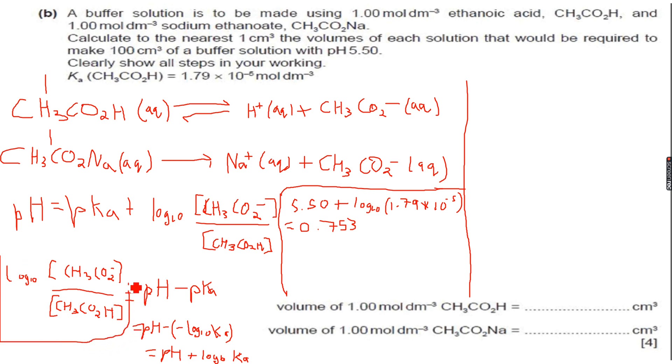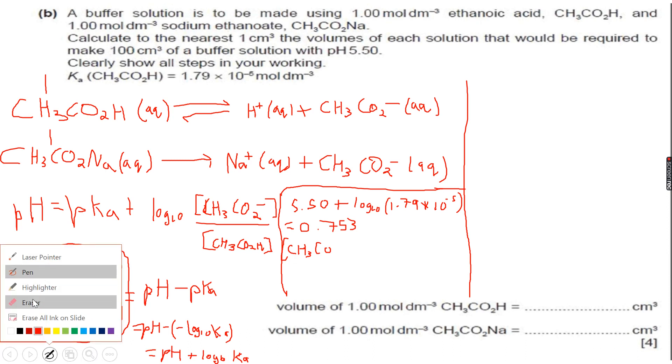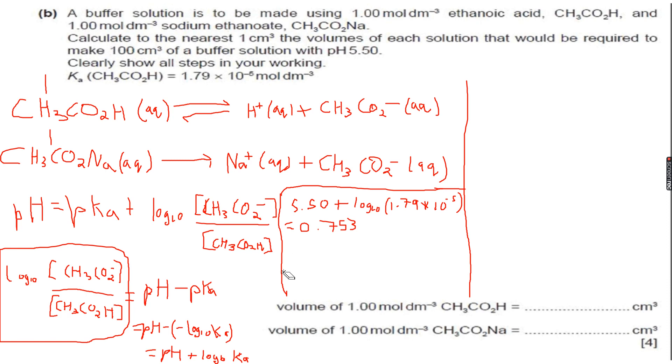So this is basically the value of log₁₀ of [A⁻] over [HA]. This is the value. So if I want the ratio of CH₃CO₂⁻, first let me write so that you don't get confused. Log₁₀ of [CH₃CO₂⁻] over [CH₃CO₂H] is equal to 0.753.